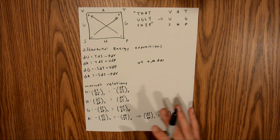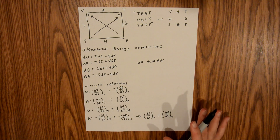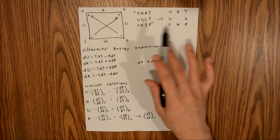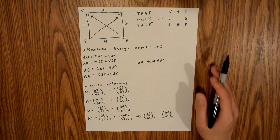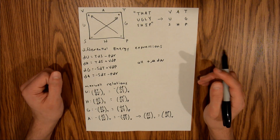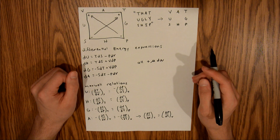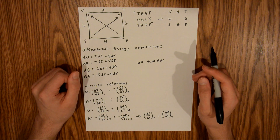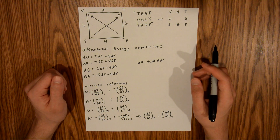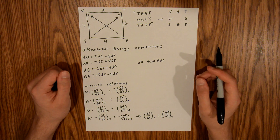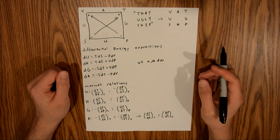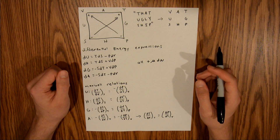That's the main information you can extract from the thermodynamic square — the square itself and a method of how to memorize it. That's pretty much it for this video. If you found it helpful, please drop a like, leave a comment if you have any questions or an idea for a future video, and please don't forget to subscribe and tell your friends about my channel. See you in the next video.